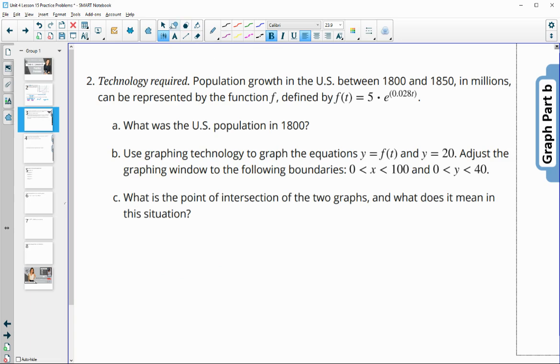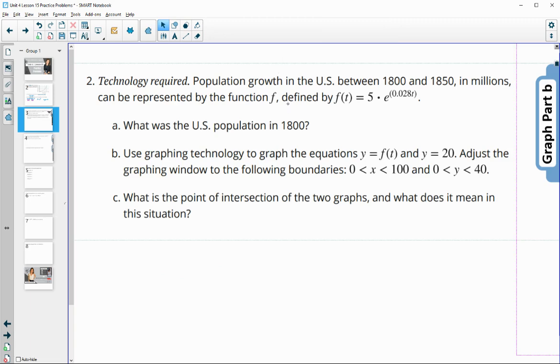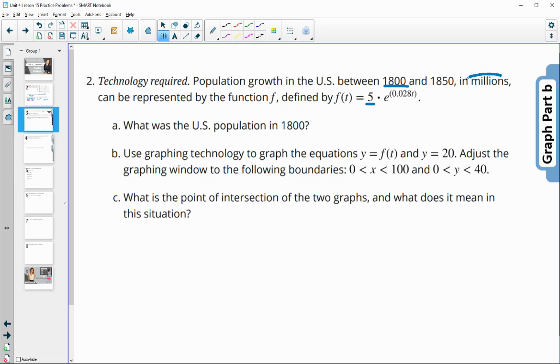Number two, the population growth in the United States between 1800 and 1850 in millions can be represented by the function F, which is here. So what is the U.S. population in 1800? Well, 1800 was the initial year, so that's going to be this initial value. And remember, it's being measured in millions, so this is going to be a population of 5 million in 1800.